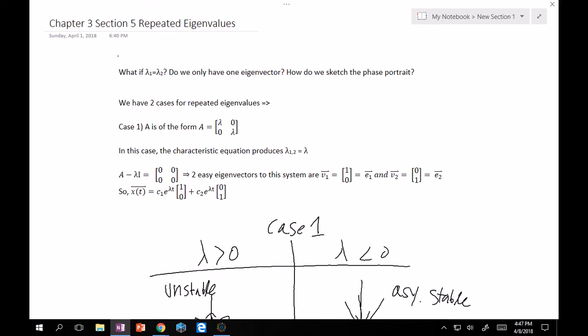You might be asking, okay, do we only have one eigenvector? And if so, then how do we sketch the phase portrait? Well, glad you asked. We have two cases for repeated eigenvalues. Case 1 is the easy case, and that's why I've written it out up here. I'm not going to bother doing an example just because they're all essentially the same.